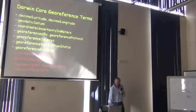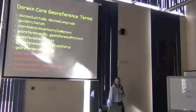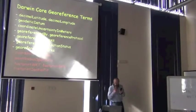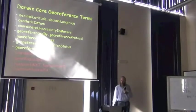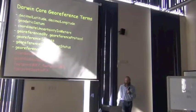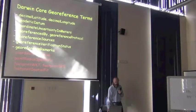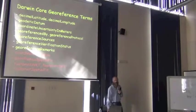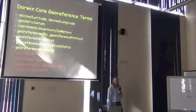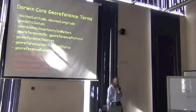I've already discussed the Darwin Core terms that are used. Now you can see, and you have some idea now, of what the coordinate uncertainty in meters is for. It's a measure of spatial data specificity, and therefore it's a tool to assess the fitness for use for any particular purpose.